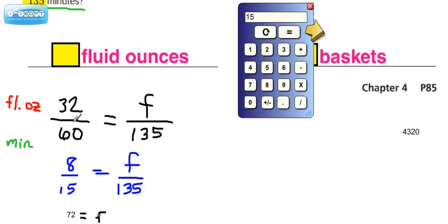So 8 fifteenths equals something over 135. Now, if this looks easier to you than what we originally did, then you might like that approach better. And then you would still proceed with either figuring out how many times 15 goes into 135 and take that same number and multiply it by the 8, or to do the cross products.